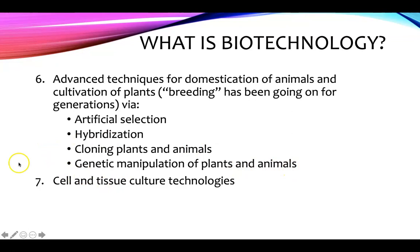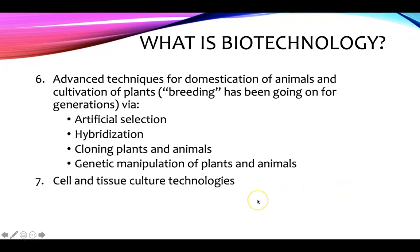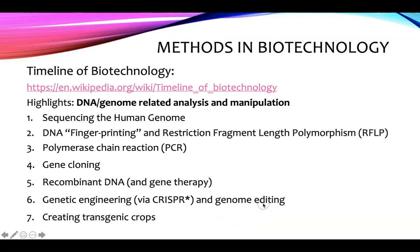Breeding has been going on for generations, but now this domestication and cultivation can be happening through artificial selection, hybridization, cloning plants and animals, and genetic manipulation of plants and animals. Number seven, we have cell and tissue culture technology. All of these subjects are pretty broad, but the following slides will go through these, other than the reproductive technologies, to give you an idea of what is happening in biotechnology today.